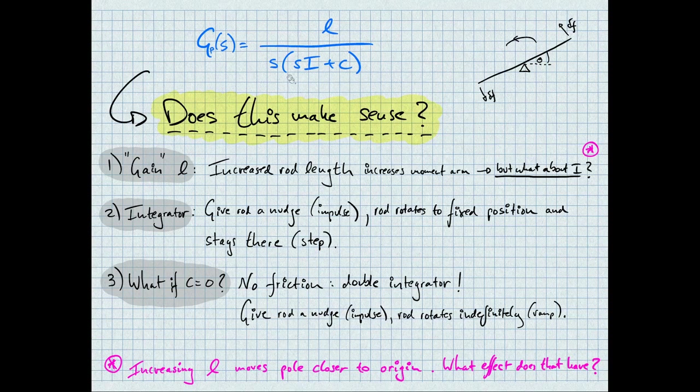Secondly, the system has a pole at the origin, which is this 1 over S term over here. This is an integrator. So, intuitively, if we give the rod a nudge, an impulse input, the rod rotates to a fixed position and stays there. And that means that's a step output.